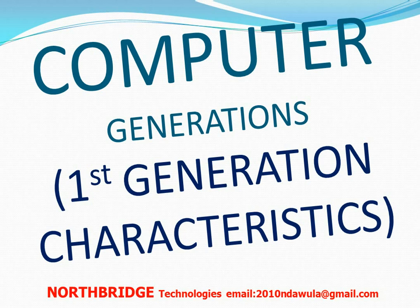Computers could do different tasks, but some of the tasks you see right now, some of these computers could not manage to do them. Being that they were characterized with certain features, that's why they could not accomplish those tasks. So let's look at computer generations.